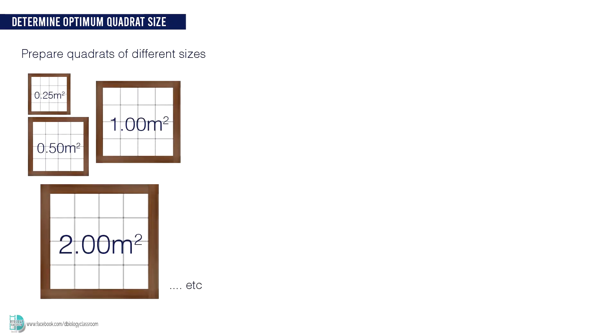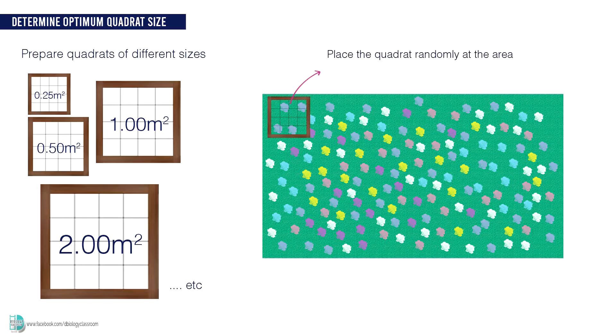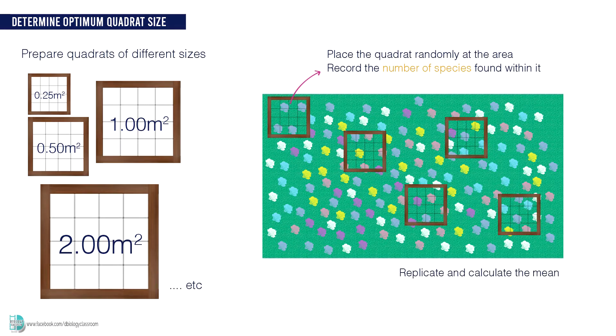To find the best size of quadrat you should use in a sampling process, you need to first prepare a few quadrats of different sizes. Then use each of the quadrats to sample the area of interest. Place the quadrat randomly at the area, record the number of species found within it, and replicate to obtain the mean. Repeat the process by using quadrats of different sizes.